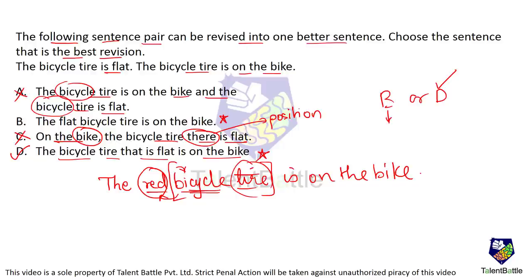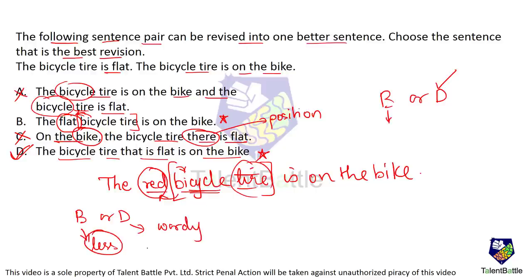Even though fewer words means a more concise sentence, a sentence should not be grammatically ambiguous just to save words. Option D — 'The bicycle tire that is flat is on the bike' — makes it explicit: what is flat is the tire, and that tire is on the bike. While B is also arguably correct, D is much more precise and appropriate. The correct answer is option D.